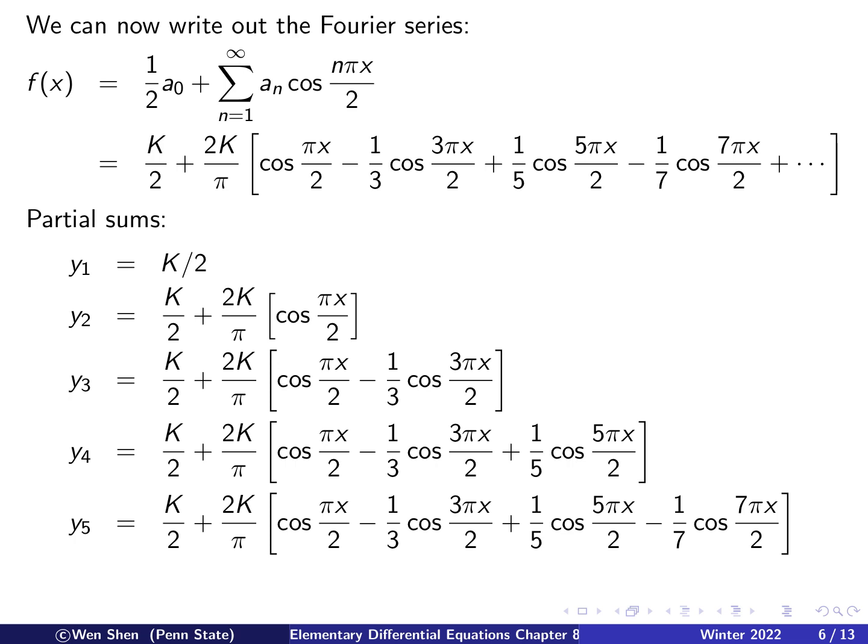So we're going to do a similar thing, that is, we'll look at the partial sums. So taking one term, we get just a constant term, that's my y1. And taking two terms, that means a constant term plus the first term here. And then taking three terms, meaning we have an additional term added up here. And then y4 will be adding one more term. And then y5 will be adding another term. You can write as many as you like. So let's take a look at these partial sums and to see how they approximate the initial piecewise constant function.